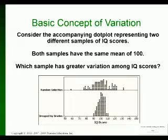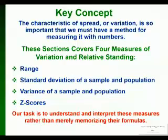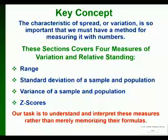That's just a basic idea of what variation means. The characteristic of spread or variation is so important in statistics we have to have numbers that measure it — we don't want to just say there's a little bit of spread or a lot of spread. We want an actual number that tells us how spread out the data is. These sections cover four measures of variation and relative standing: range, standard deviation, variance, and z-scores.